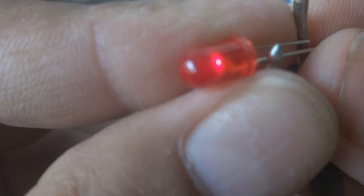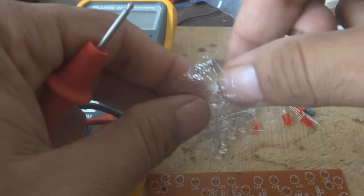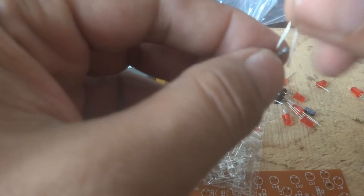It's glowing, you can see. This means our polarity is okay—the longer lead is positive, the shorter is negative. We'll check the white LED in the same way. You can see it's glowing, so the positive lead is the longer one.